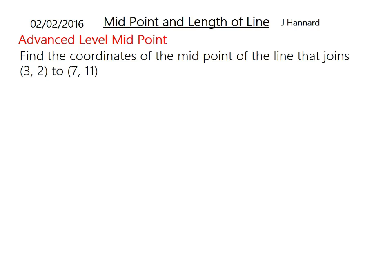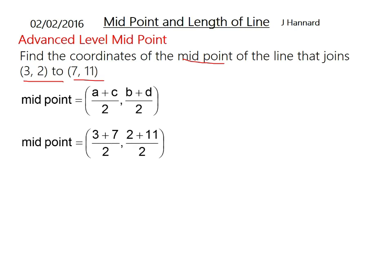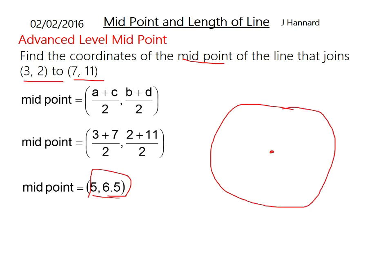Here is an example. Find the coordinates of the midpoint of the line that joins 3, 2 and 7, 11. There is your midpoint equation, the average of the X's comma the average of the Y's. Put in the numbers: 3 plus 7 over 2 comma 2 plus 11 over 2. That cancels down to 5 and comma 6.5. That is all you would be expected to do to find the midpoint of a line, and it is usually to do with circles. If you want to find the center and you were given the diameter, you can find out the center of the circle by doing the midpoint.